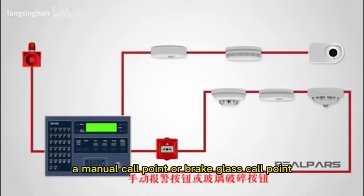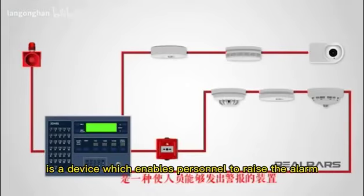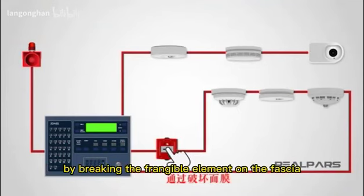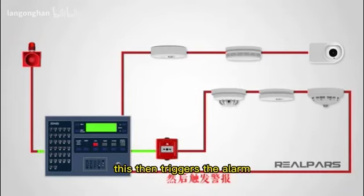A manual call point or break glass call point is a device which enables personnel to raise the alarm by breaking the frangible element on the fascia. This then triggers the alarm.